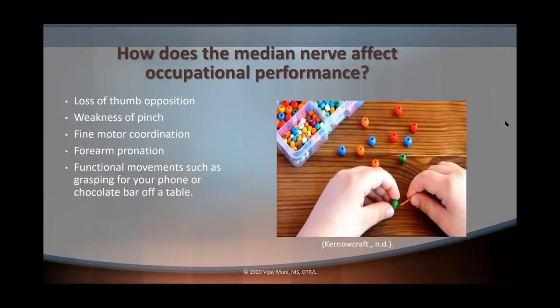How does the median nerve affect occupational performance? With median nerve injury, there's going to be a loss of thumb opposition and weakness of pinch. Fine motor coordination is going to be affected, as well as forearm pronation and functional movements such as grasping your phone or picking up a chocolate bar off the table. As seen in the picture, a person is struggling with putting a string through a little bead — with a median nerve injury, this fine motor coordination is going to be an issue.